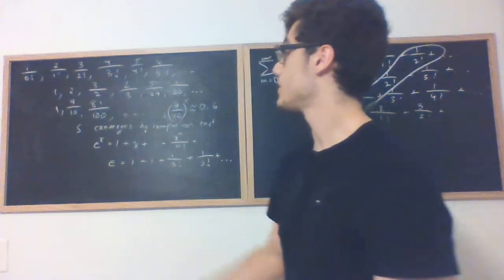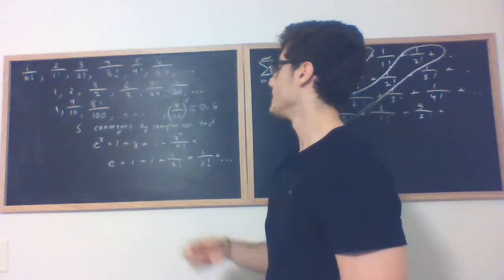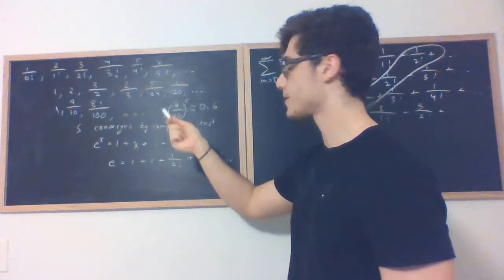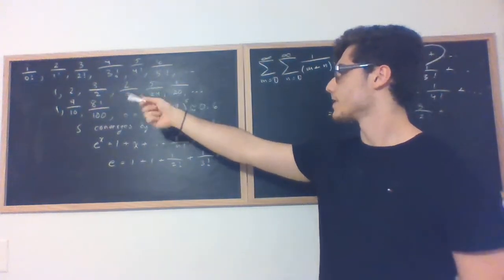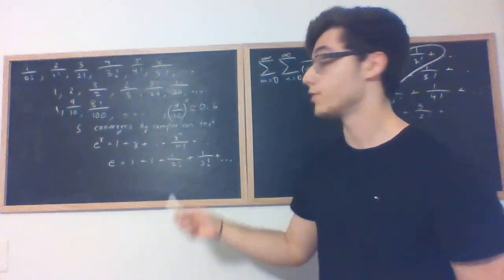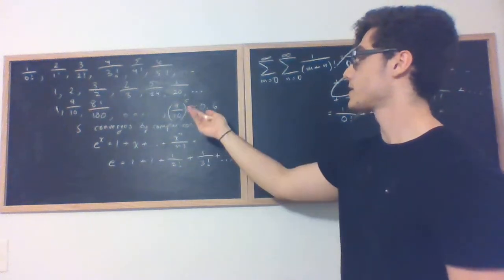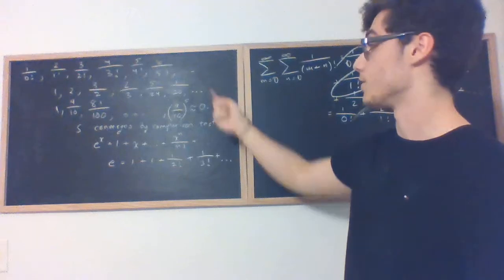Now we consider the terms of each series, the first six. So the sixth term of our example series is 9 tenths to the power of 5 which is about 0.6. And the sixth term of our series in question is 1 twentieth which is smaller than 0.6. So what this says is since this converges and eventually this becomes smaller than this, that also converges.